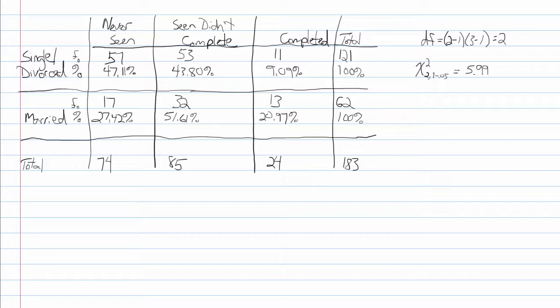This table has two rows and three columns, which leads to a degrees of freedom of 2. Using a table of Chi-Square values, we see that the Chi-Square critical value with 2 degrees of freedom and an alpha level of 0.05 is 5.99.